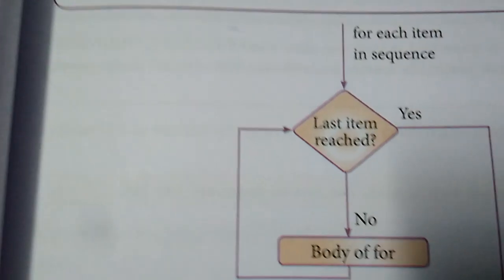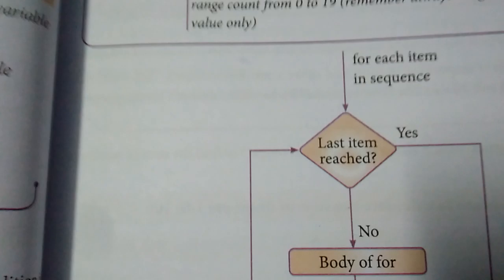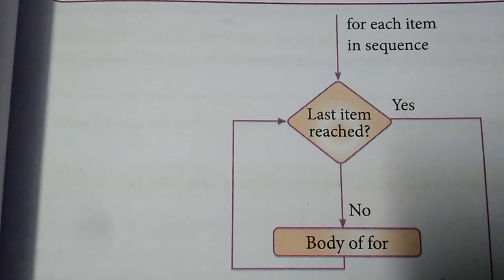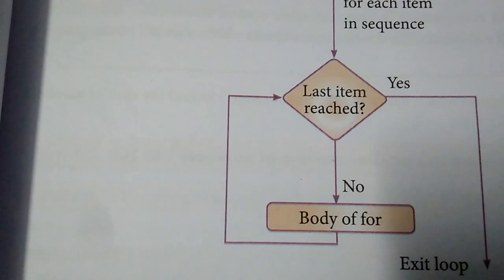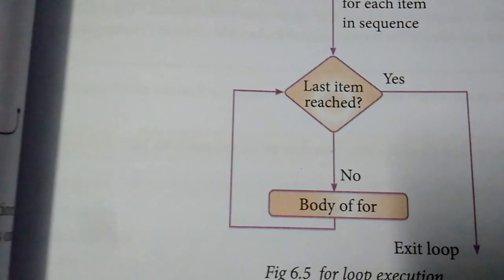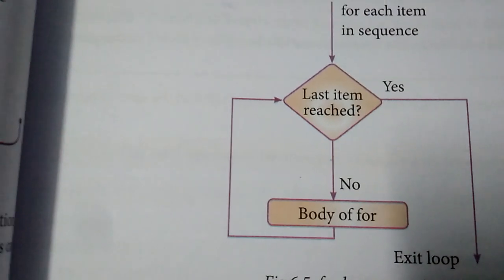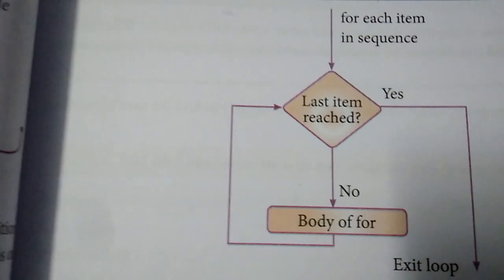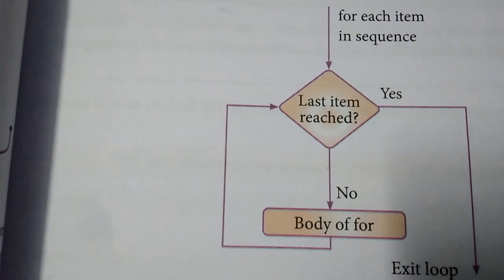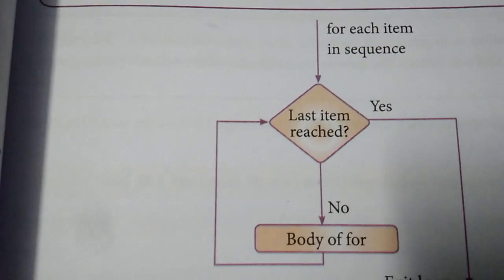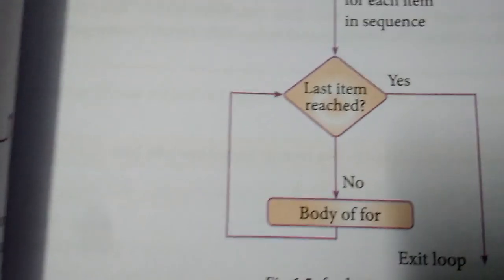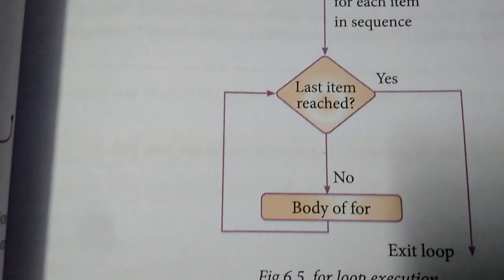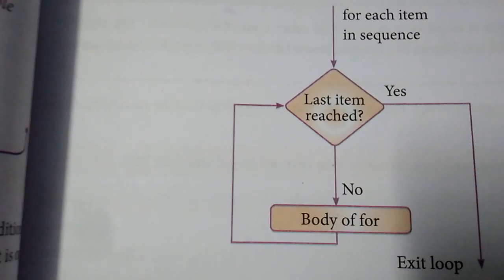Now, we see the flow chart of for loop. For each item in sequence, last item reached exit item loop. That means if the condition is true, it goes to the exit loop. Else, body of the loop will be executed. This is the flow chart of the loop.